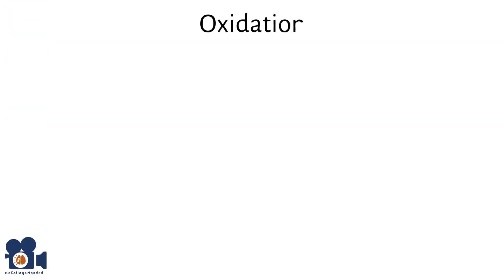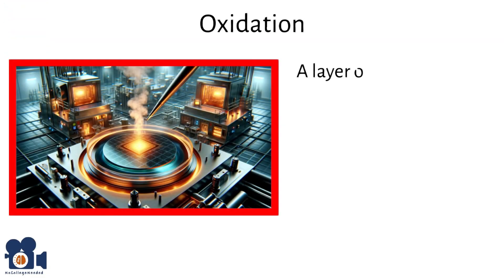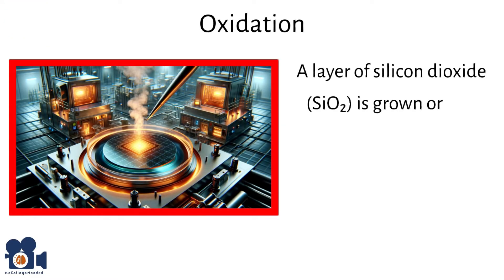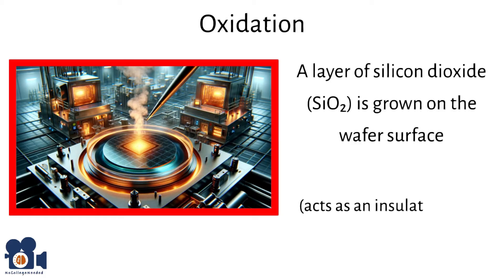Next is oxidation, in which a layer of silicon dioxide is grown on the wafer's surface by exposing it to oxygen or steam. This layer acts as an insulating layer and a mask for later processes.